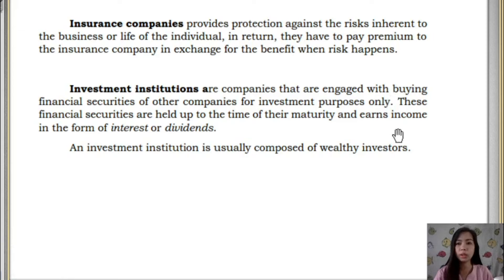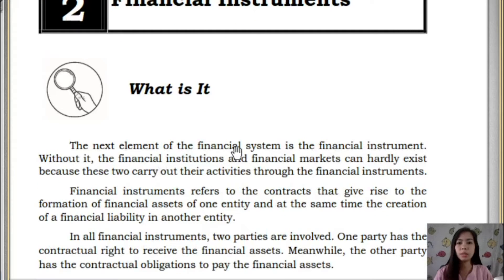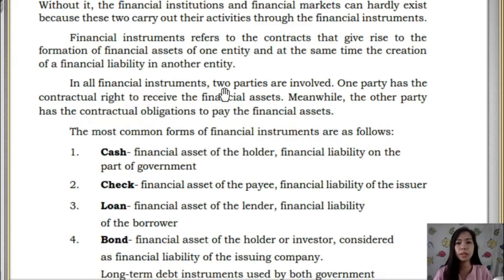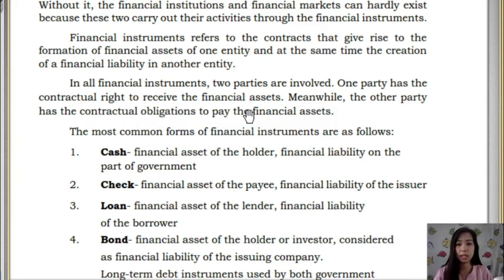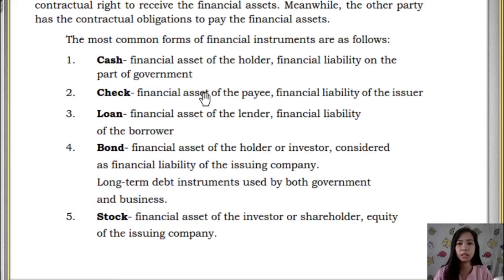We are done with Lesson 1. Let's go now to Lesson 2: Financial Instruments. The next element of the financial system is financial instruments, which refers to contracts that give rise to the formation of financial assets of one entity. Two parties are involved: one party has the contractual right to receive financial assets, and the other party has the contractual obligation to pay. Common financial instruments include cash — a financial asset of the holder and a financial liability on the part of the government.